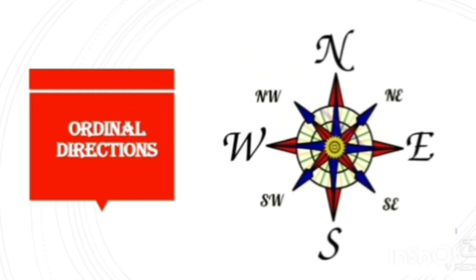This compass shows ordinal directions. The direction in between North and East is Northeast, in between South and East is Southeast, in between South and West is Southwest, and in between North and West is Northwest.